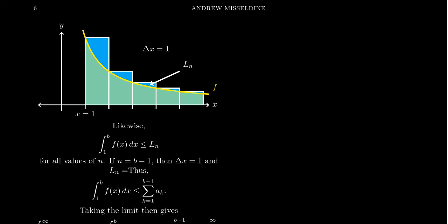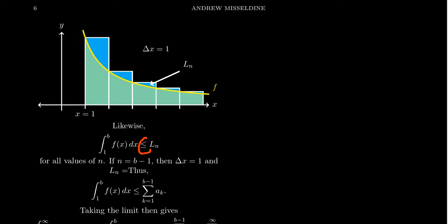If we flip directions and focus on the left-hand rule: because the function is decreasing, the left-hand rule picks the point on the left, which gives us the biggest value in any range. So the rectangles are going to overestimate the area under the curve — see all the extra area above the function. Therefore, in this situation the left-hand rule will overestimate the integral, so the integral from 1 to b of f(x) dx is less than or equal to the left-hand sum L_n.